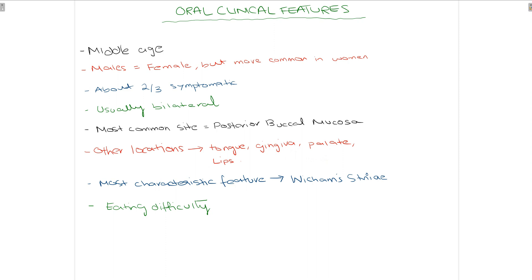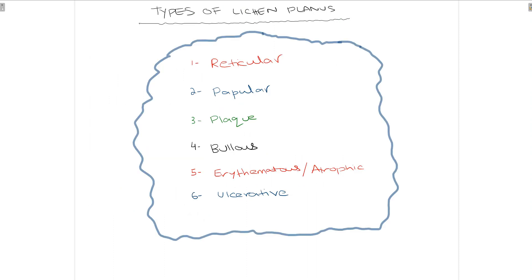One of the most characteristic features associated with oral lichen planus is called Wickham's striae. These lesions can affect the entire oral cavity, causing very painful symptoms and making eating difficult for the patient. In the oral cavity there are six types of clinical representation of oral lichen planus: reticular, papular, plaque, bullous, erythematous (also called atrophic), and ulcerative.